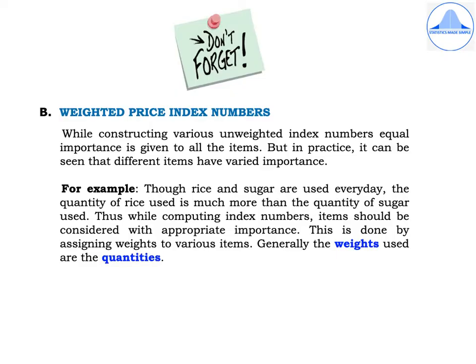Price Index Numbers are broadly classified into two categories: Unweighted Price Index Numbers and Weighted Price Index Numbers. While constructing various unweighted index numbers, equal importance is given to all the items, as seen in previous videos. But in practice, different items have varied importance, so let's discuss Weighted Price Index Numbers.